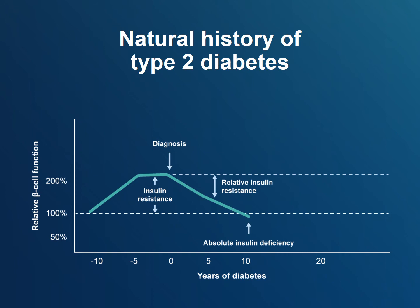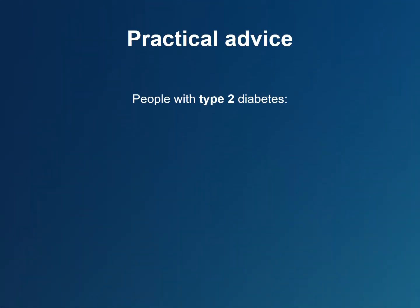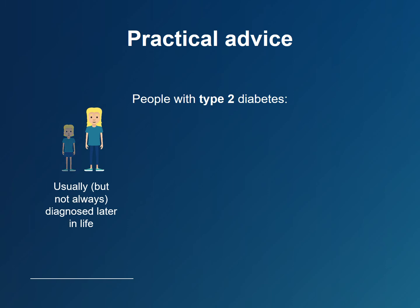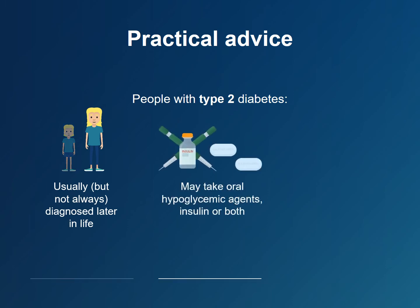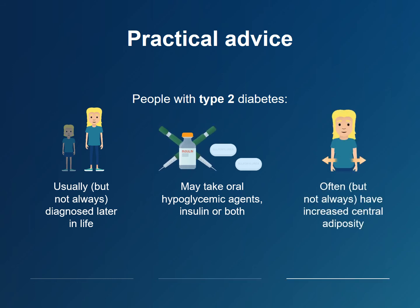Since the body still makes insulin, those with type 2 diabetes often use oral or non-insulin injectable medications that improve insulin sensitivity or increase the body's insulin production. As type 2 diabetes progresses, insulin production falls even further, which may lead to absolute insulin deficiency. People with type 2 diabetes are often, but not always, diagnosed later in life and may take oral agents, insulin, or both. Type 2 diabetes is often associated with central obesity, the most common cause of insulin resistance.